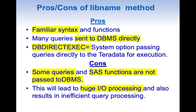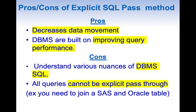Most DBMS are designed to process large amounts of data very efficiently. Now let us look at the pros and cons of explicit SQL pass-through. One major challenge is that you need to know the DBMS-specific SQL — for example, Oracle has its own SQL nuances and some functions are different. Another limitation is that not all queries can use explicit SQL pass-through. If you have a table in SAS and another in Oracle and want to join them, you cannot do it through explicit SQL pass-through — the only way is using a LIBNAME statement.